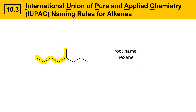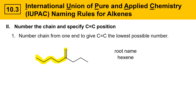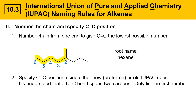Moving on, we have our alkene with the longest carbon chain identified and its root name is hexene. The next thing you need to do is number the chain and specify the C=C double bond position. Number the chain from one end to give the lowest possible number to the C=C double bond. In this case we'll start from the top because it gives the C=C double bond low numbers of one and two. It's understood that the C=C double bond spans two carbons, so you don't need to list both carbons — you only list the first number.